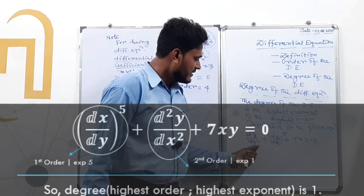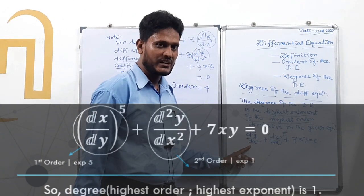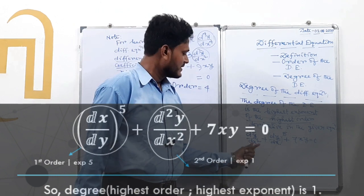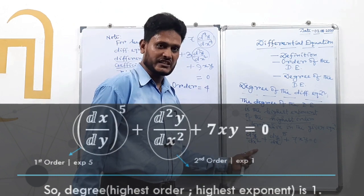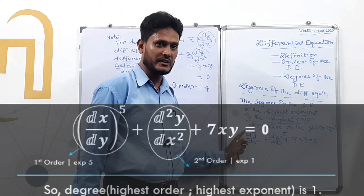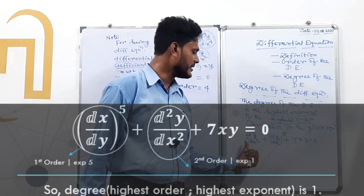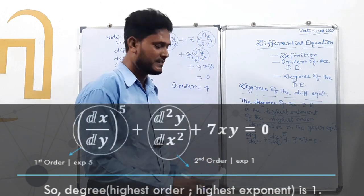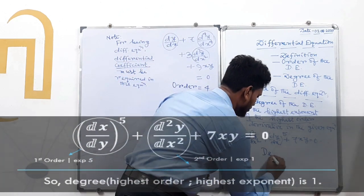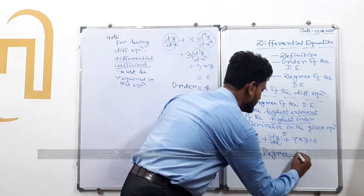Referring back to the earlier example with d²y/dx² + 3·dy/dx + 7xy = 0: here dy/dx is first order and d²y/dx² is second order. The highest order derivative is d²y/dx², and its power is 1. Therefore, the degree of this differential equation is 1.